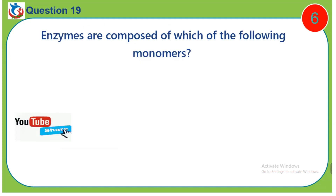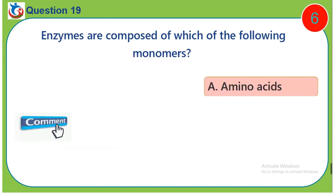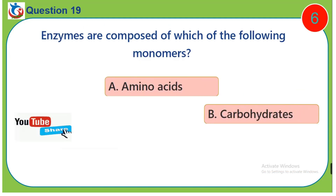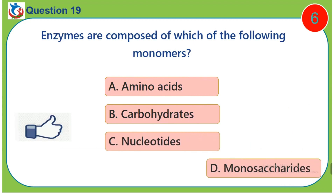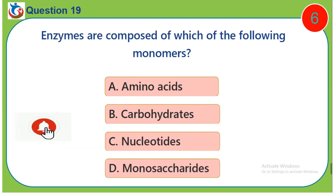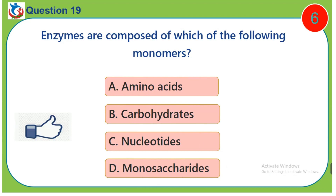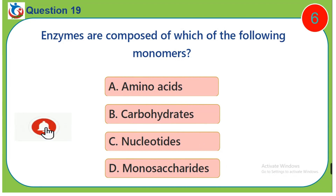Question 19. Enzymes are composed of which of the following monomers? A. Amino acids. B. Carbohydrates. C. Nucleotides. D. Monosaccharides.